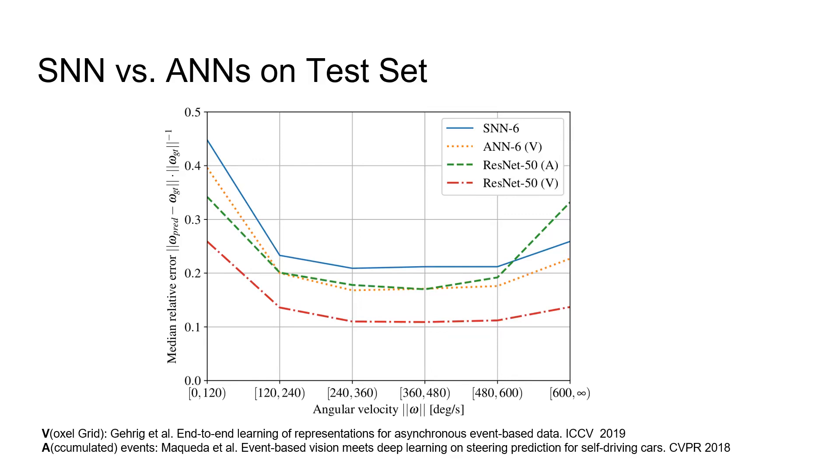The green curve shows the performance of an input representation that ignores the temporal aspect of events. It is evident that performance degrades significantly, which indicates that the accurate timestamps of events are crucial to solve this task.